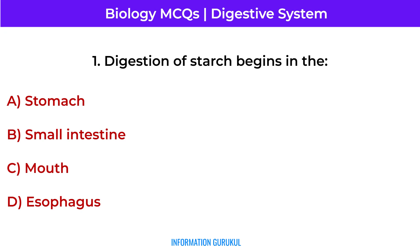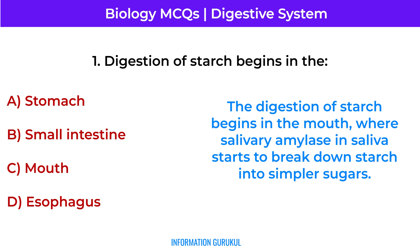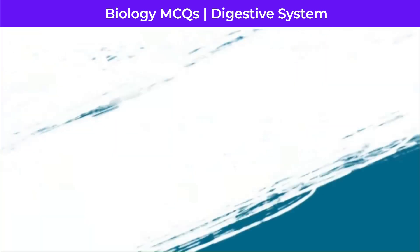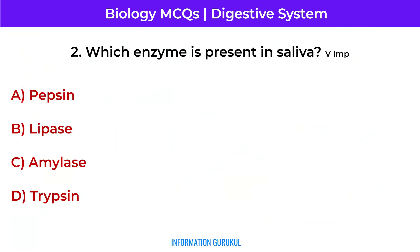Digestion of starch begins in the mouth, where salivary amylase in saliva starts to break down starch into simpler sugars. Which enzyme is present in saliva? Amylase.